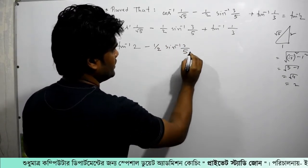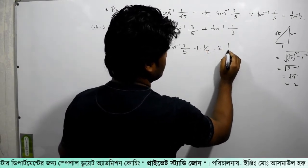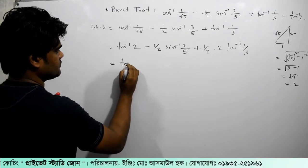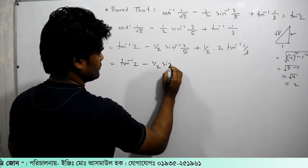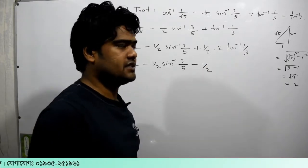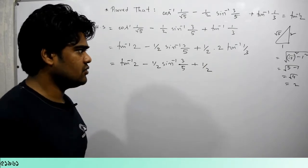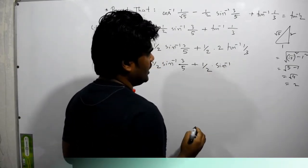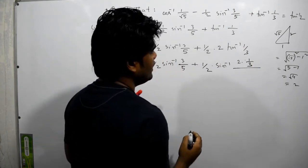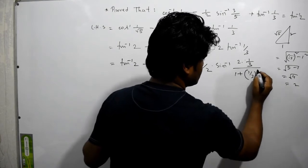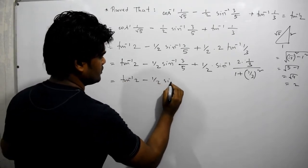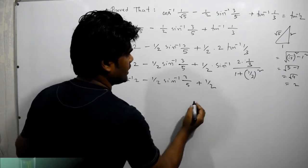After the conversion, we arrive at sin inverse of 3 by 5. Now I will work through this simplification. We get sin inverse 3 by 5 plus half — this is a sine inverse step.